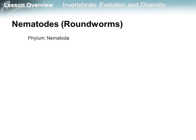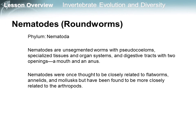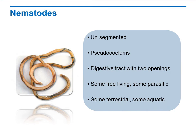Now let's see nematodes. Nematodes belong to phylum Nematoda. Nematodes are unsegmented worms with pseudocoeloms, specialized tissues and organ systems, and digestive tracts with two openings — a mouth and an anus. Nematodes were once thought to be closely related to flatworms, annelids, and molluscs, but have been found to be more closely related to arthropods. Some are free-living and some are parasitic; some are terrestrial and some are aquatic.